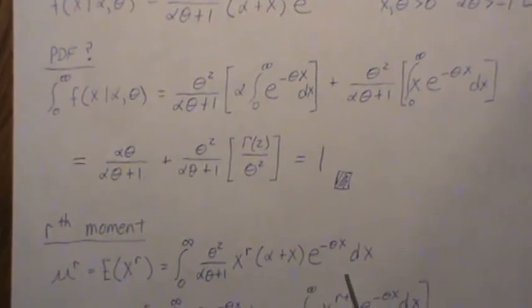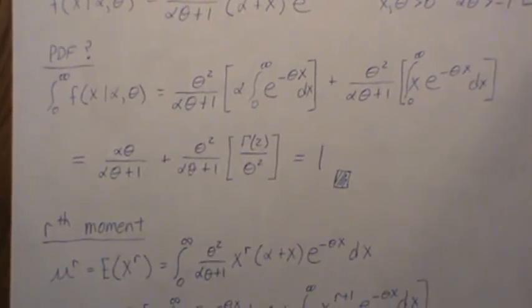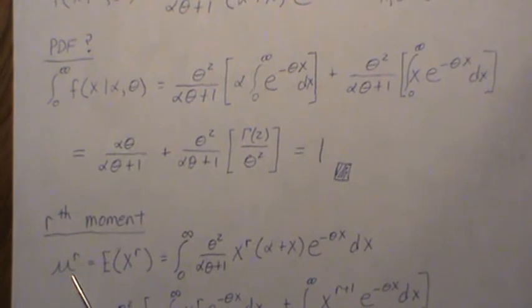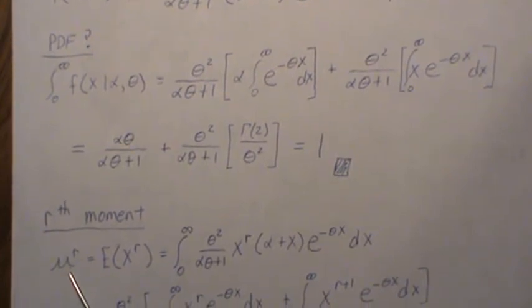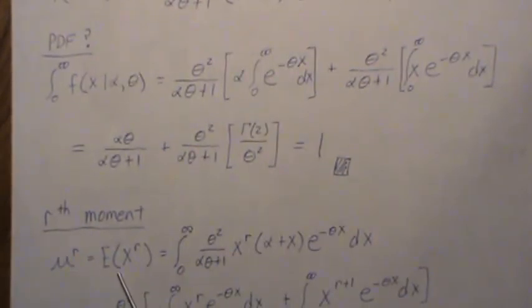Now let's derive the rth moment of this function. We generically call it mu to the r, which is E, the expected value of x to the r. This means you take x to the r times its density and then integrate it from zero to infinity.